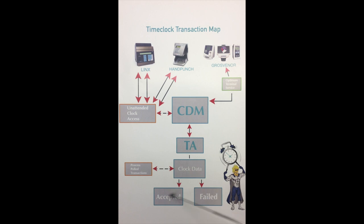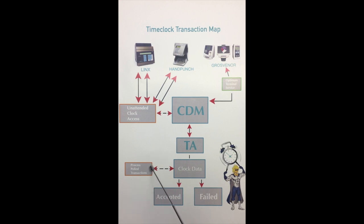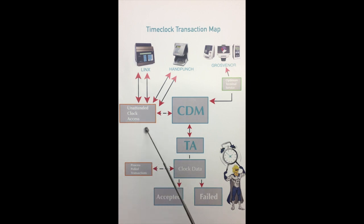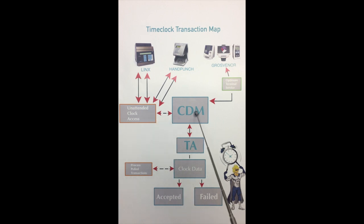First, we're going to check the accepted or failed transactions for the punches. Then, we're going to check the process poll transaction job to make sure that it is running and pushing the clock data down to the accepted or failed. Next, we're going to go through the steps of the unattended clock access, making sure that that job is pushing the data from the clock data manager down to the clock data, ready to be pushed over to accepted and failed.